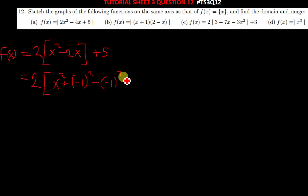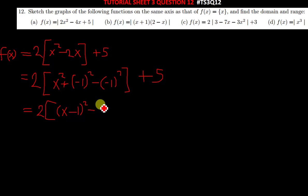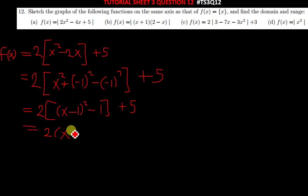You repeat this same negative 1, then plus 5. You complete the square: you have (x minus 1) squared, then negative 1 squared gives you positive 1, then plus 5. When you multiply 2 times what's in the brackets, and write your positive 5 outside.